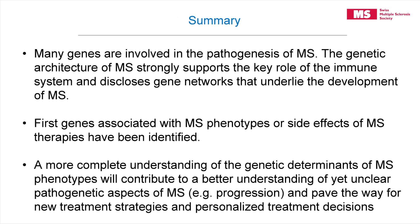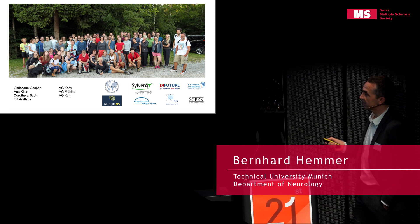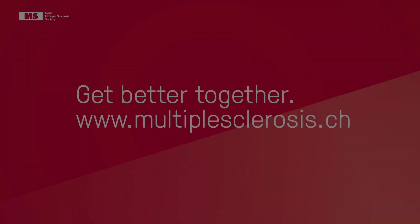In conclusion, many genes are involved in the pathogenesis of MS. The genetic architecture of MS strongly supports the key role of the immune system and discloses gene networks underlying MS development. First genes associated with MS phenotypes and side effects of MS therapies have been identified, and a more complete understanding of the genetic determinants of MS phenotypes — especially those underlying disease progression — will contribute to our understanding of MS and hopefully pave the way for new treatment strategies and personalized treatment decisions.